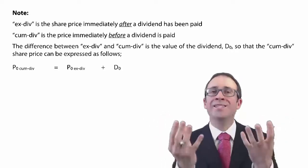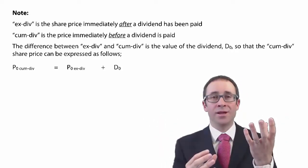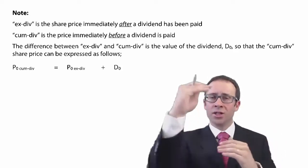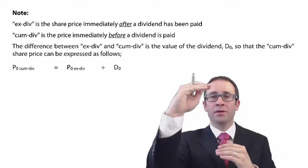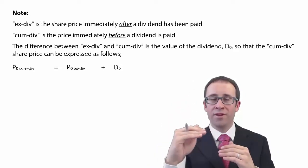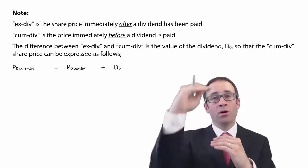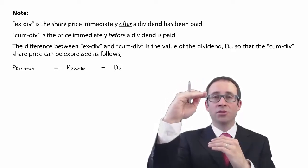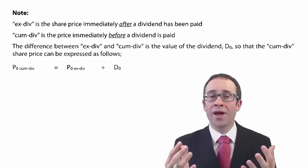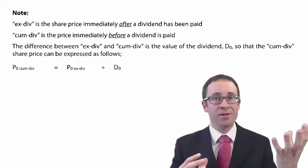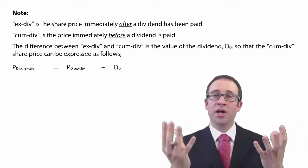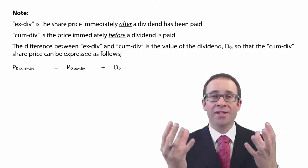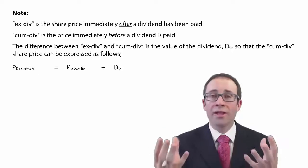So what has to happen is that when that dividend is declared and we receive it as an investor, the share price was $1.10, so it has to drop by the value of the dividend. Here it was $1.10, the dividend was $0.10, so it has dropped now to $1. What we have is a $0.10 dividend in one hand and a share worth $1 — and I still have exactly the same amount of wealth: $1.10.